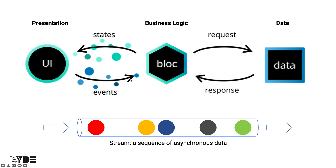Here, the request is called an event and the data is called a state. So a Bloc can be seen as a machine that receives events as input and outputs state as output. We need communication channels between Bloc and UI.